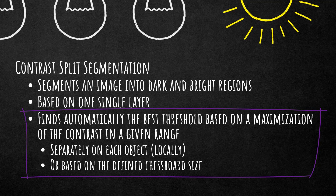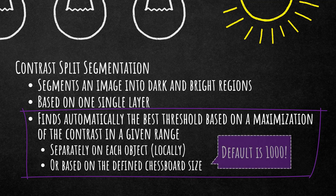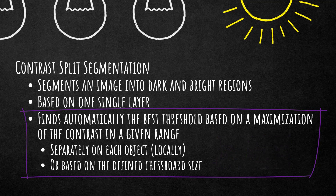If you set the chessboard to a small number, say 10, it splits the domain into a 10×10 chessboard of objects and calculates the best threshold for each chessboard tile. If you set the chessboard to a very large number that encloses the whole image, it's more or less a global approach — it looks at all information within that object.